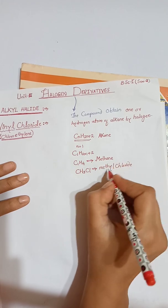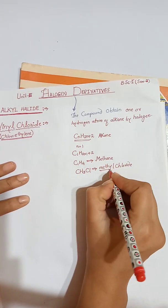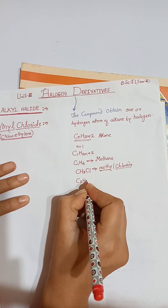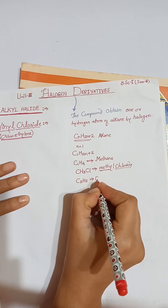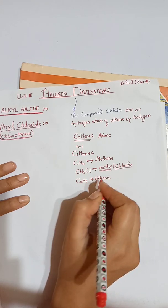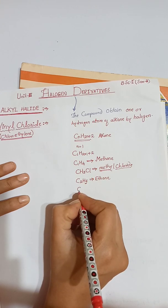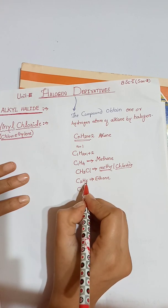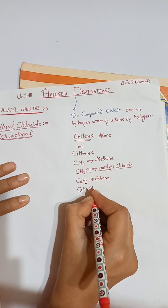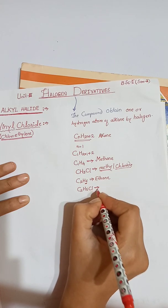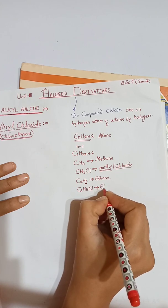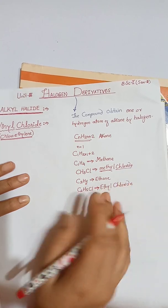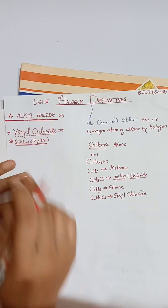Similarly, we have C₂H₆, that is ethane. If we replace one hydrogen atom of ethane by a halogen, we get C₂H₅Cl — only one hydrogen atom is replaced by a halogen atom, that is chlorine. This compound is called ethyl chloride. These compounds are commonly known as alkyl halides.